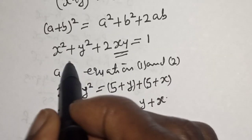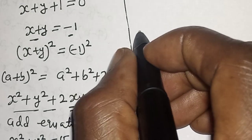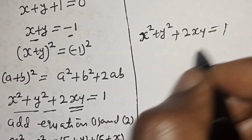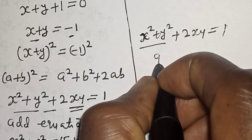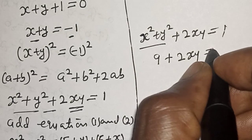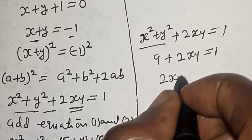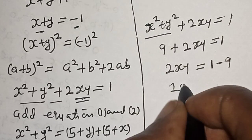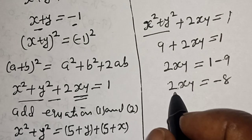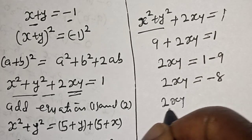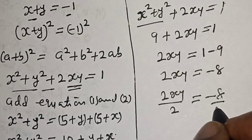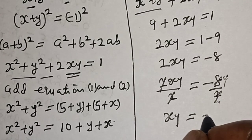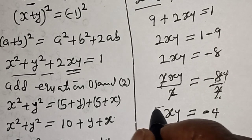Let's substitute back. We know s plus y equals minus 1, so s square plus y square equals 10 plus minus 1 equals 9. Substituting into s square plus y square plus 2sy equals 1: 9 plus 2sy equals 1. Then 2sy equals 1 minus 9, so 2sy equals minus 8. Dividing both sides by 2, sy is equal to minus 4. That is our final answer.